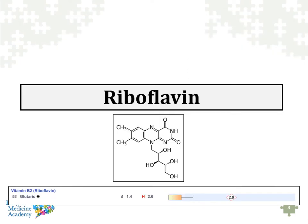I don't want to oversimplify this because there are many nutrients important for mitochondrial function, but I want to highlight one in particular called riboflavin. You can actually measure riboflavin through various tests. This is a screenshot of an organic acid marker called glutaric acid. When glutaric acid is elevated, it indicates a deficiency of vitamin B2 or riboflavin. In this case, this patient has a deficiency of B2.